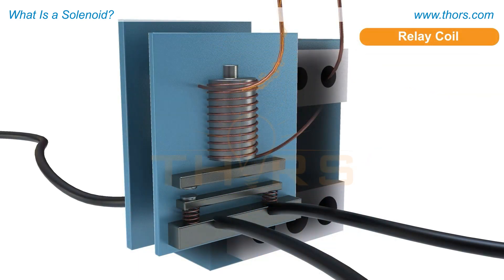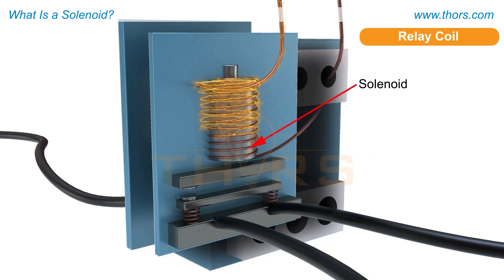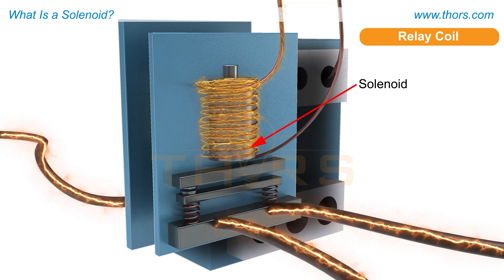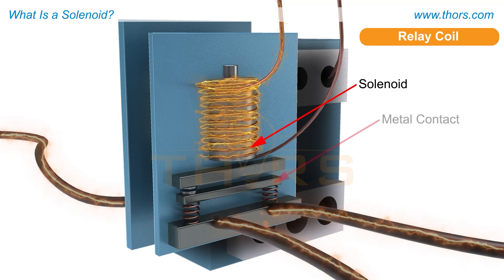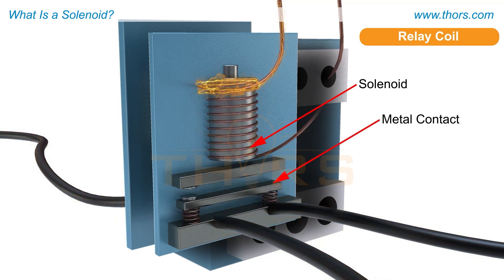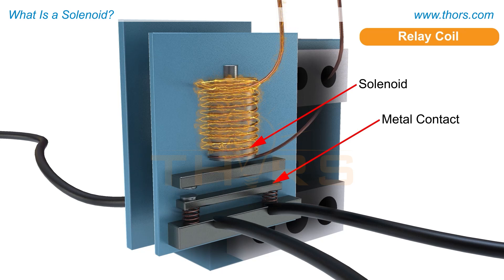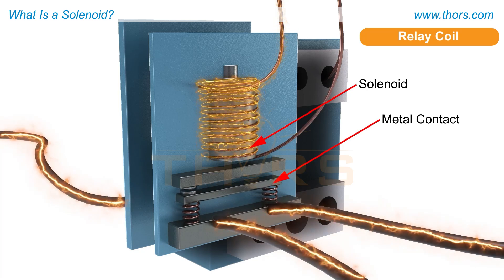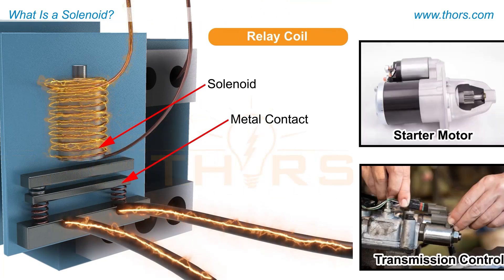In relays, solenoids are used to operate switches electrically. When the solenoid coil is energized, it pulls a metal contact to close or open a circuit, allowing or interrupting the flow of current to different parts of the circuit.